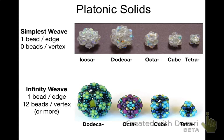Such basic beaded polyhedra are fine, but I like hollow beaded beads with really large holes. With the simplest weave, I use one bead per edge and no beads per vertex. With infinity weave, however, I use one bead per edge and 12 beads per vertex. The beads at the vertices are woven in two layers, and as long as the valence at each vertex is three, this arrangement of beads is quite stable.